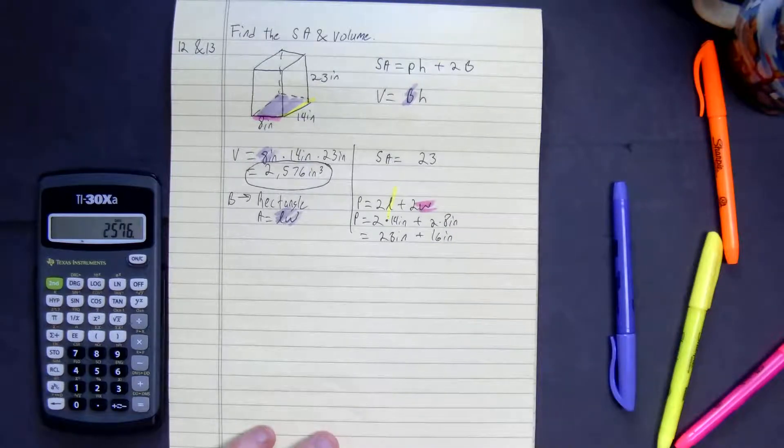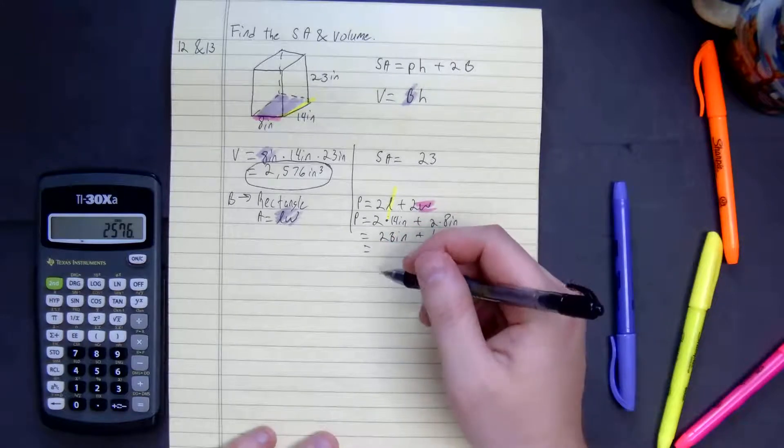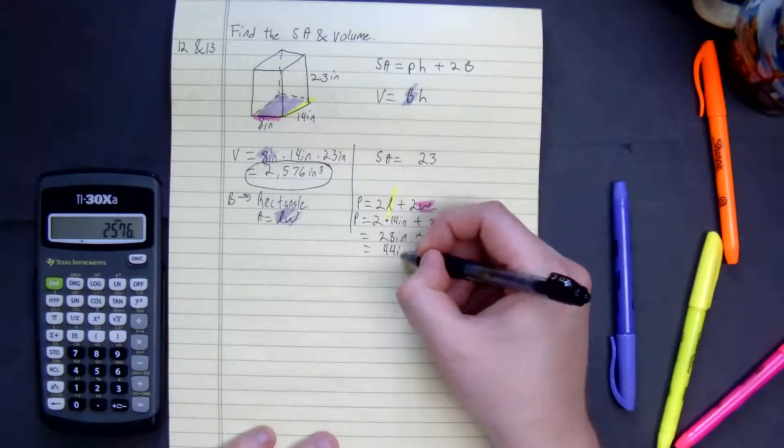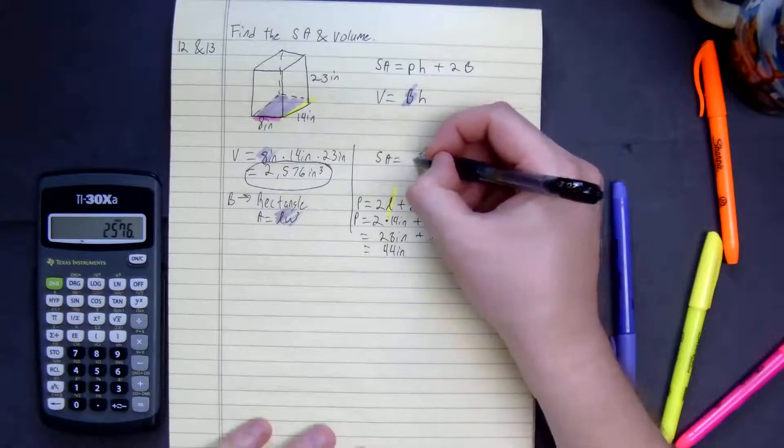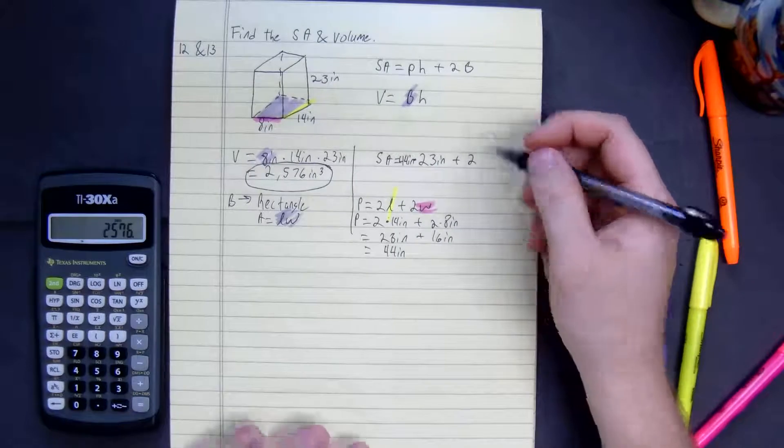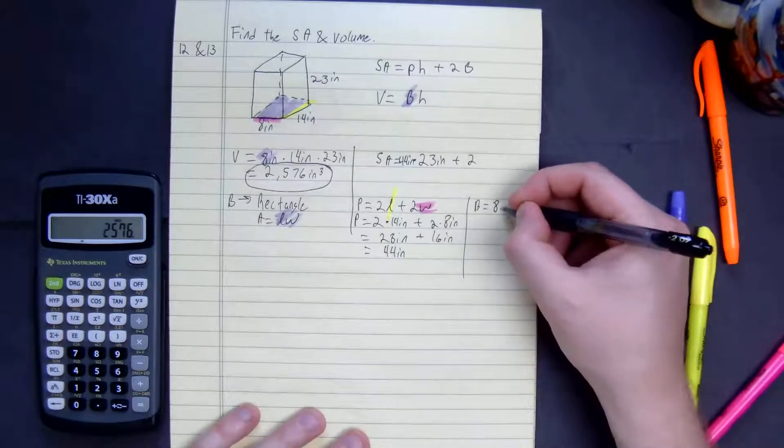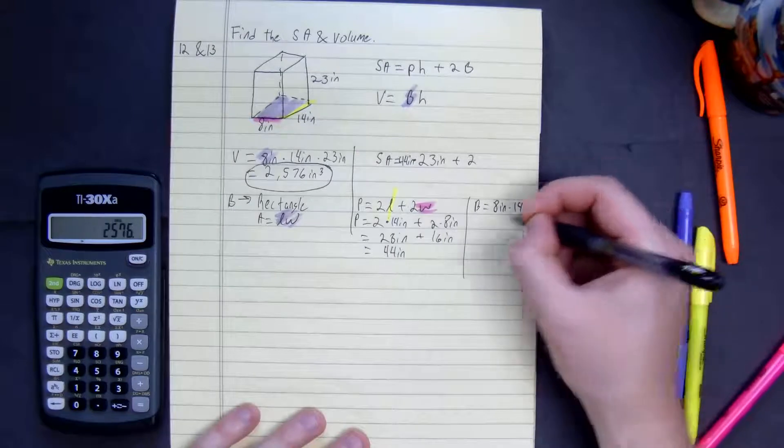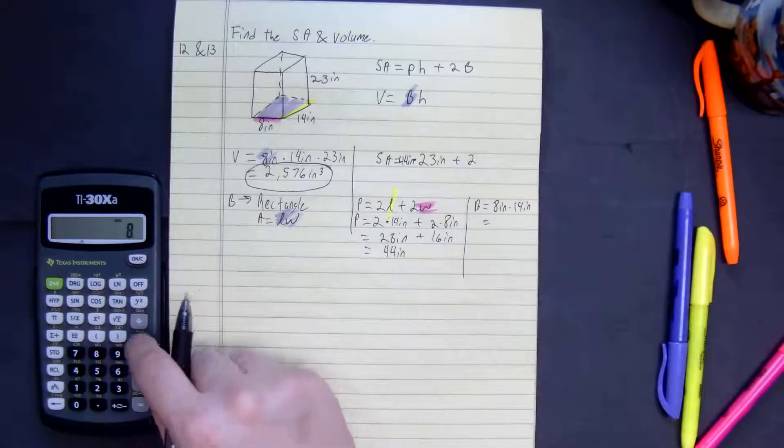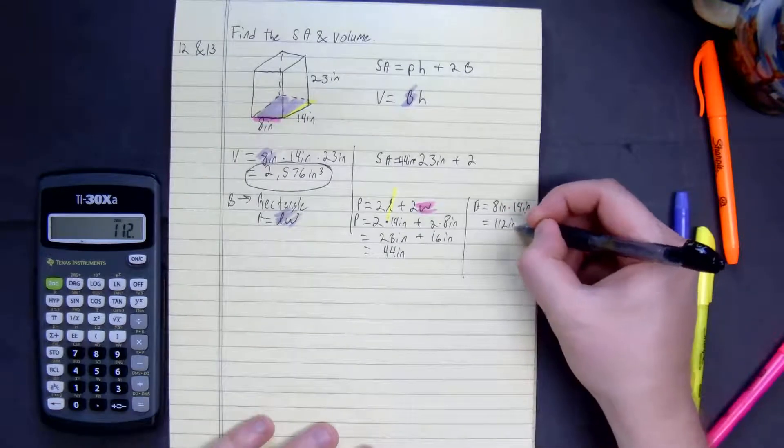So we get 44. This is equal to 44 inches, so it's going to be multiplied by 44 inches plus 2 times the base. The base is equal to 8 inches times 14 inches, which is going to be 8 times 14, 112 inches squared.